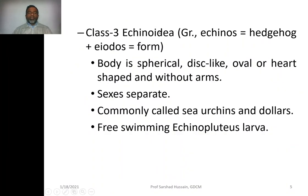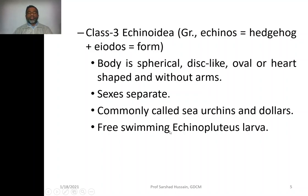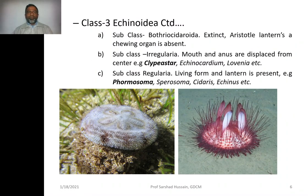The third class is Echinoidia. 'Echinos' means hedgehog and 'eidos' means form, because they resemble the mammal hedgehog. Body is spherical, disc-like, oval, or heart-shaped, without arms. Commonly called sea urchins or sand dollars. They have free-swimming Echinopluteus larvae.